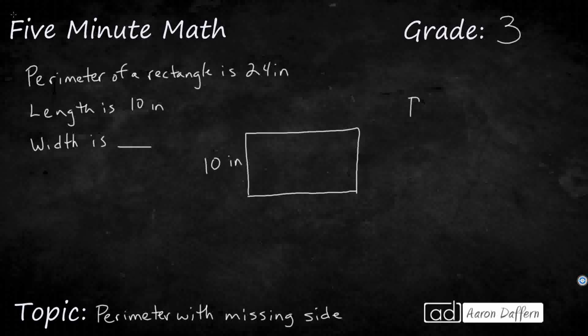So the perimeter equals 24 inches. Now remember, the perimeter is all the way around, right? It's all four sides together. So if this side right here, our length is 10, then we know that this side right here is 10.